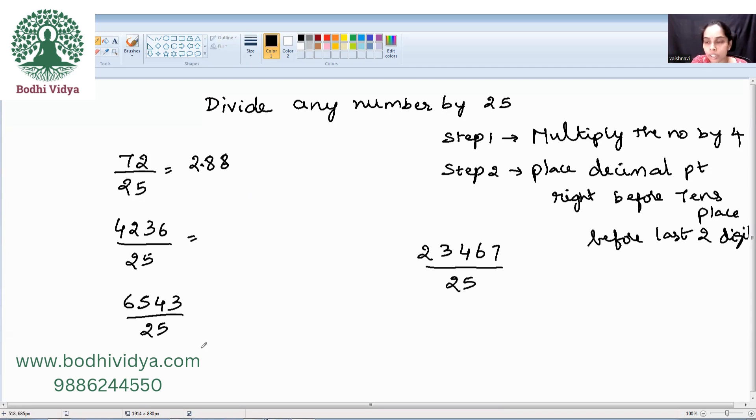Now, let's look at another example. 4 times 4 is 16. 4 times 2 is 8. 4 times 3 is 12. 4 times 6 is 24. Do the carrying. 16944. Now, you need to place a decimal point before the last two digits here. So, the answer is 169.44.